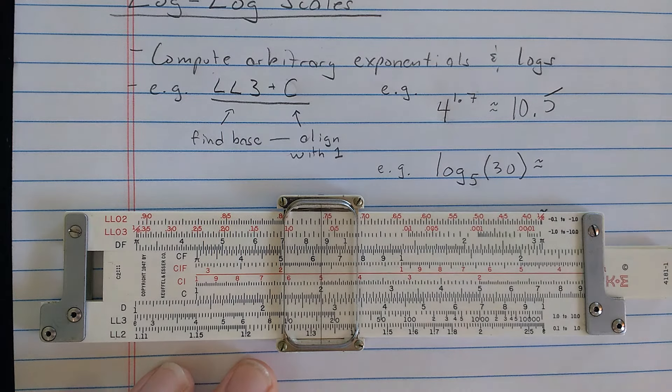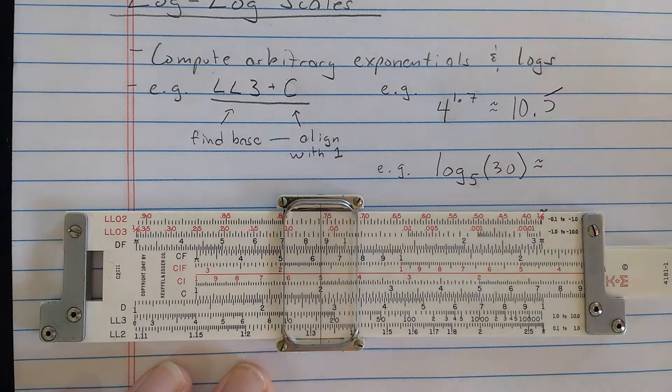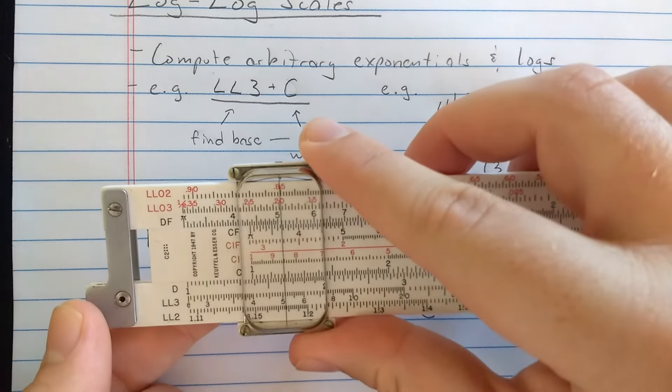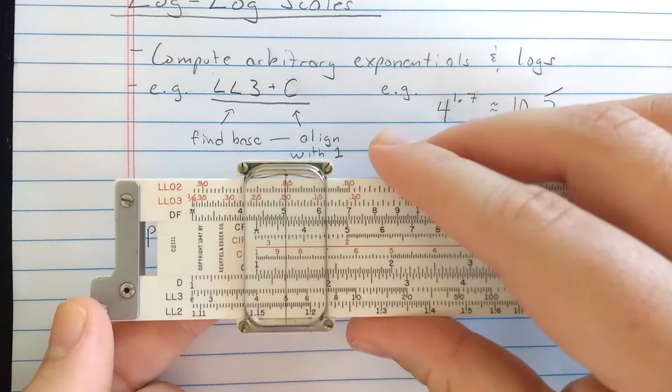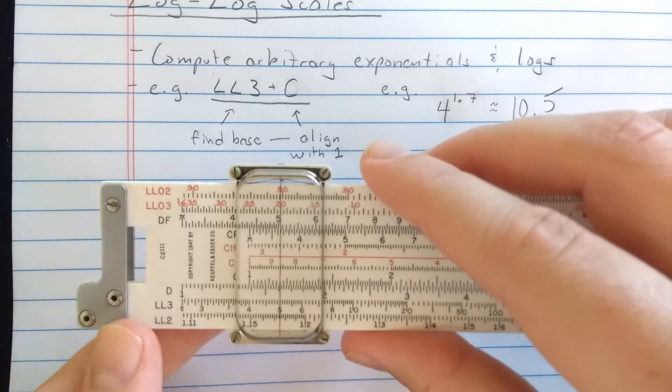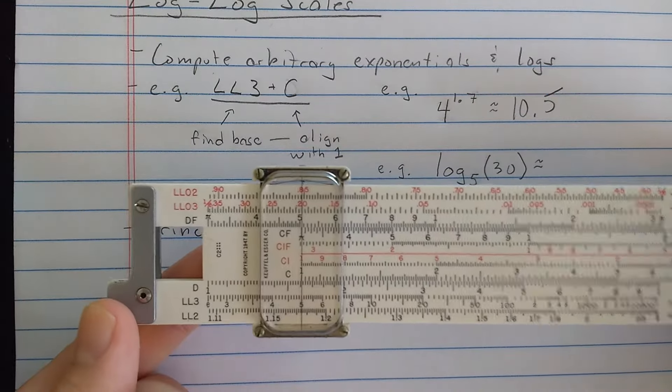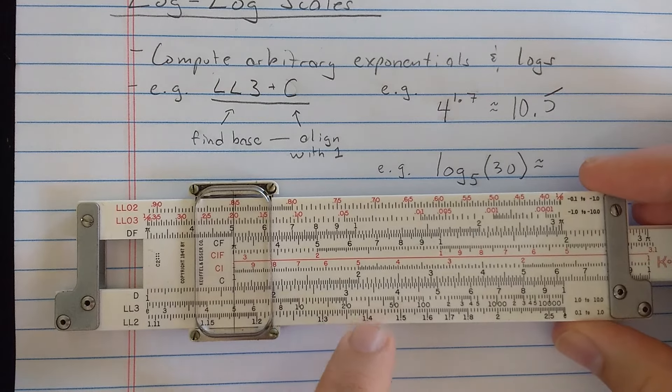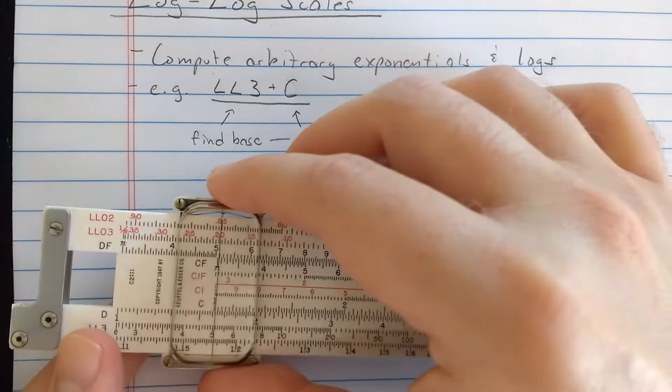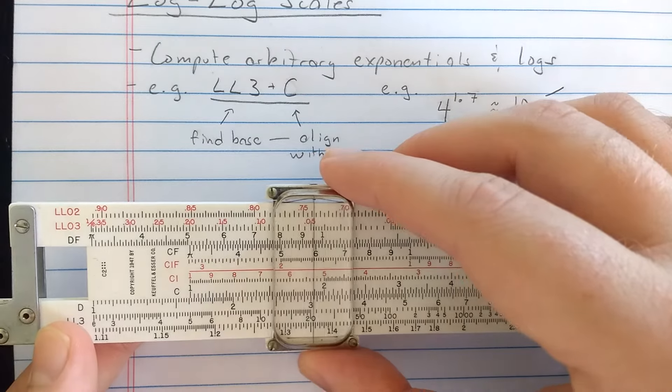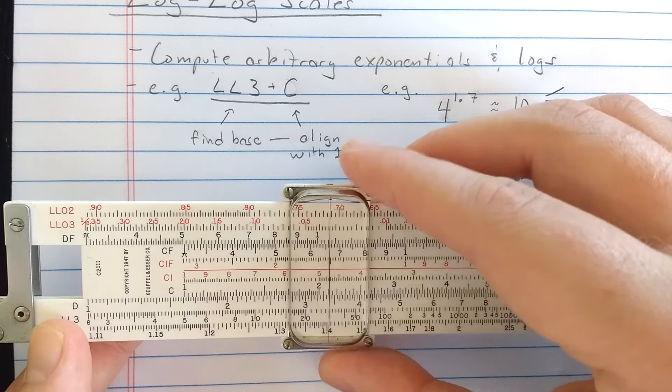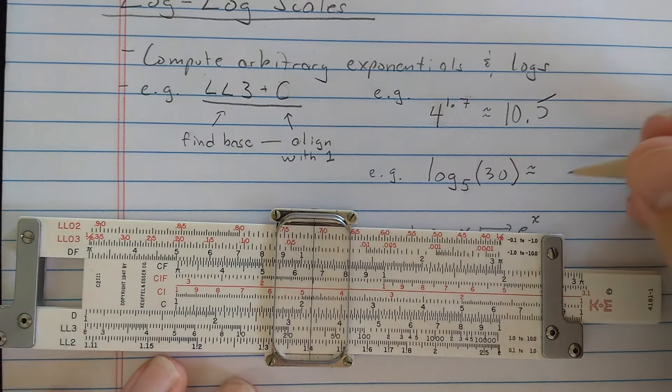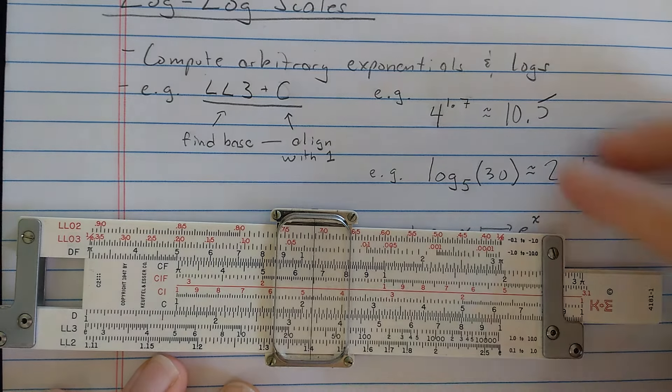You can do this process in reverse to compute logarithms of arbitrary base. So how could I do this log with base 5? Well, again, I'll find on the log-log-3 scale the base, which here is 5. So I found the 5 on the log-log-3 scale. Then what I'll do is, again, I'll align the 1. Then I'll find the 30 on the log-log-3 scale. So here's 20. This is 30. And I can read the result there. That looks like about 2.1 and maybe a hair, so maybe 2.11.